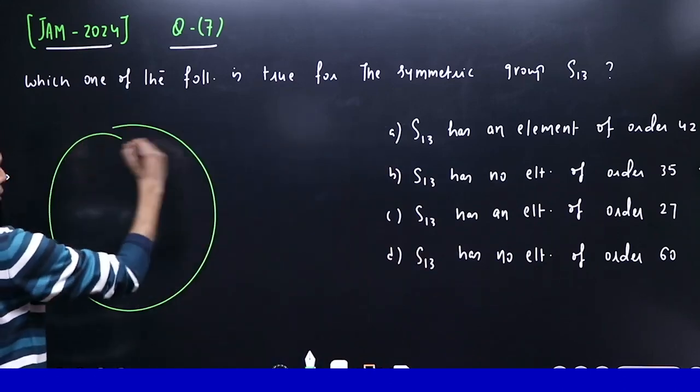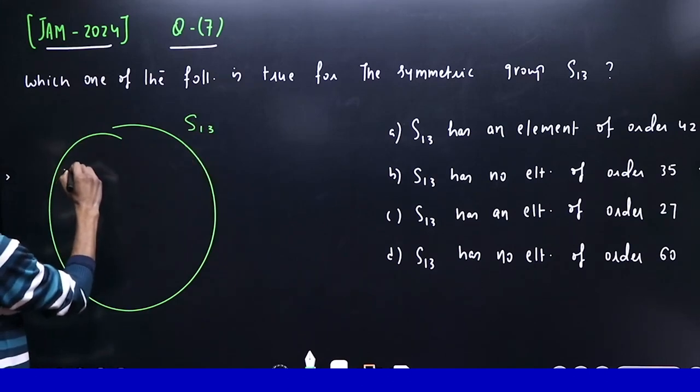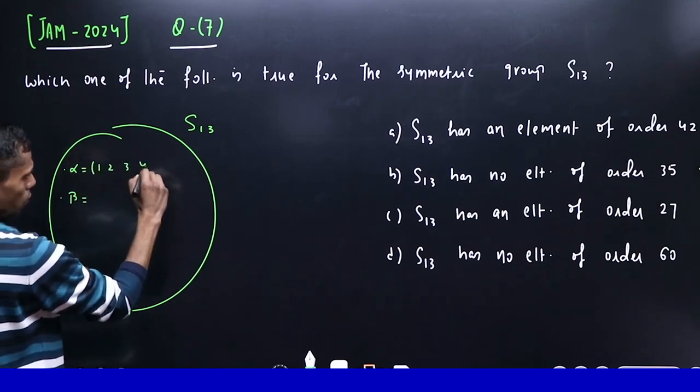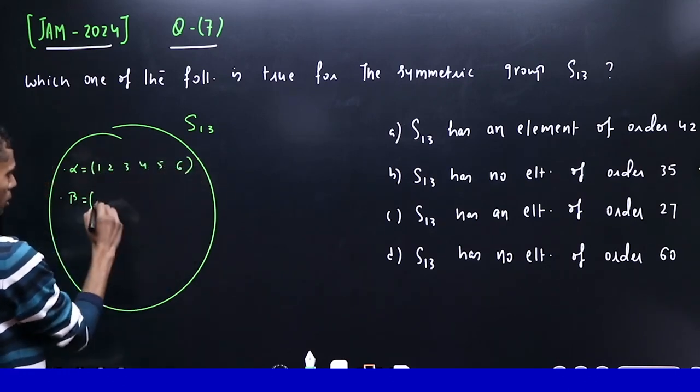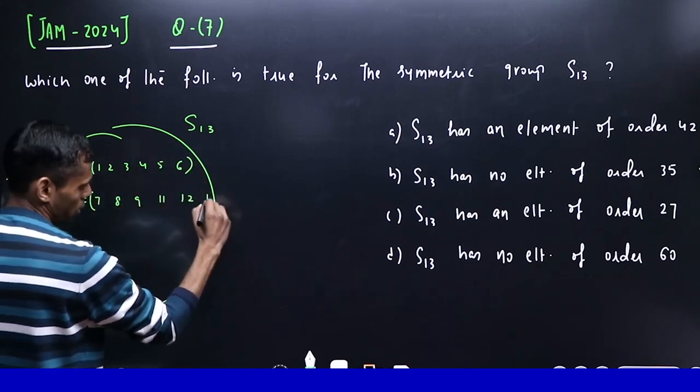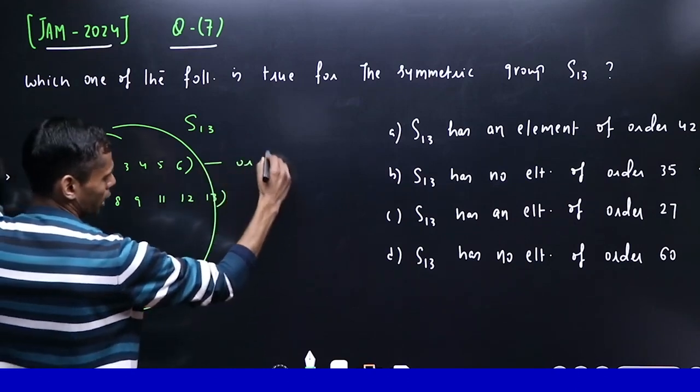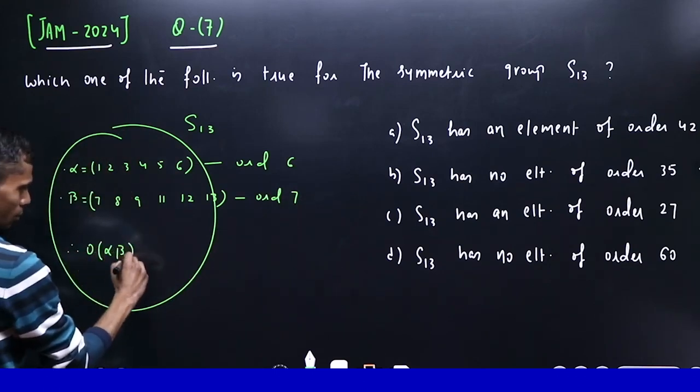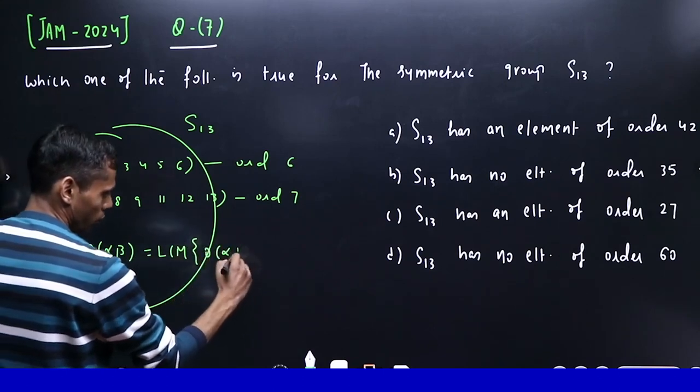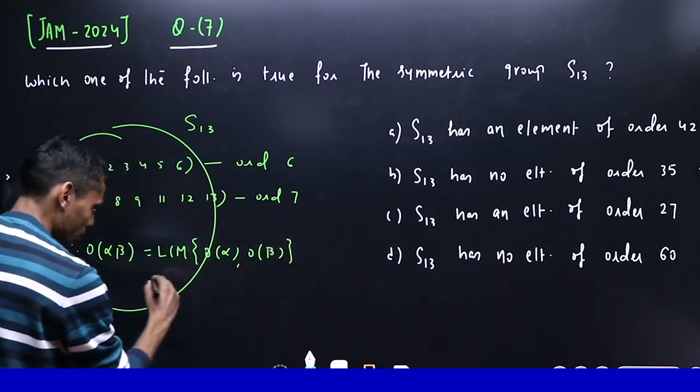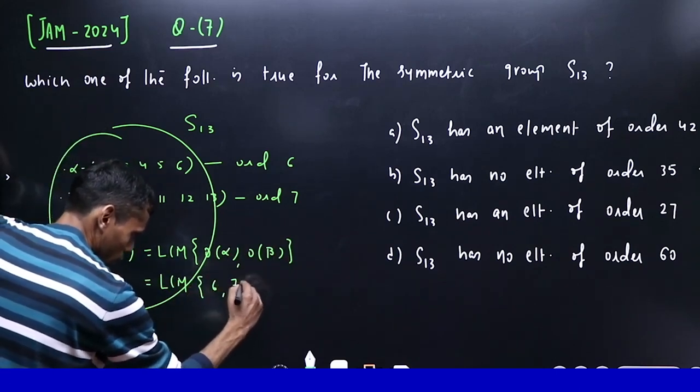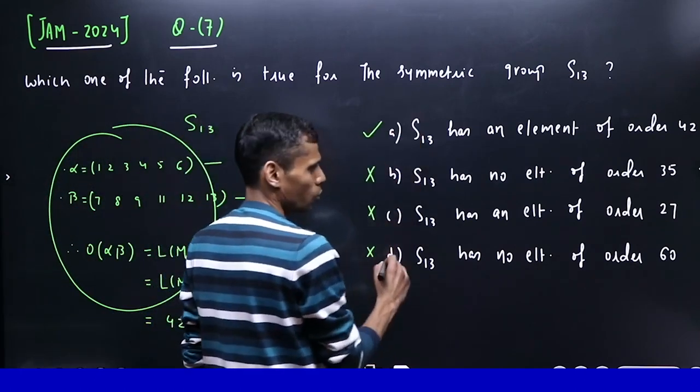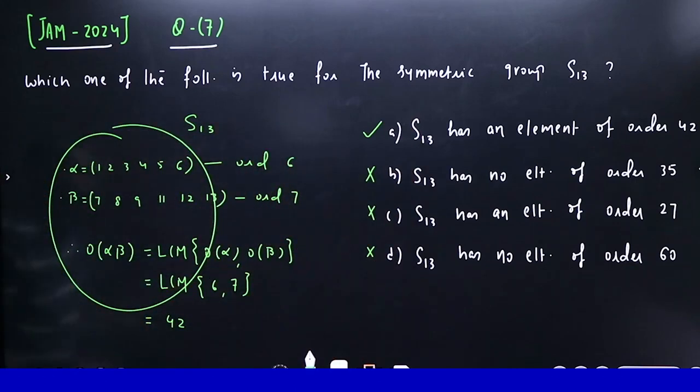We have 13 symbols in S₁₃. Consider this: if you take α = (1,2,3,4,5,6) and β = (7,8,9,10,11,12,13). You can see this has order 6 and this has order 7. The order of αβ will be the LCM of order of α and order of β. This will be lcm(6,7). The LCM of 6 and 7 is 42. So the first part is correct. In that case, you don't need to check the rest because this question has a single correct answer. I hope this is very clear to all of you.